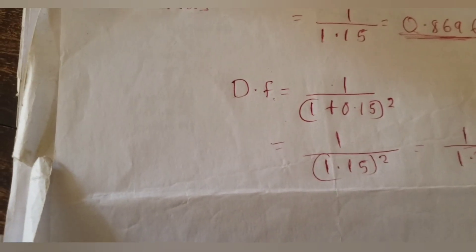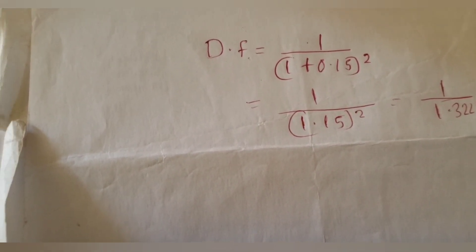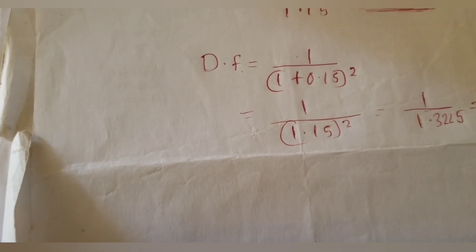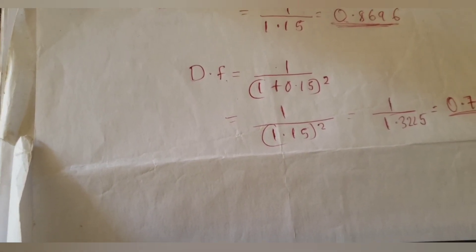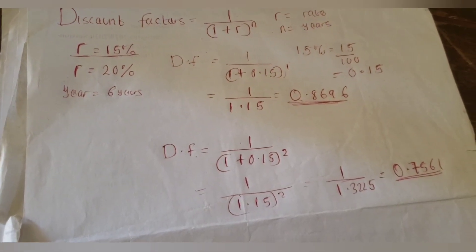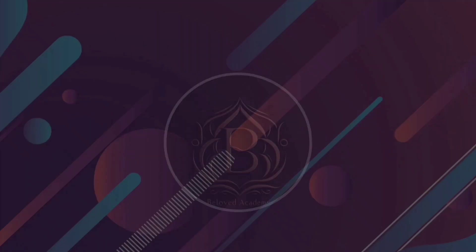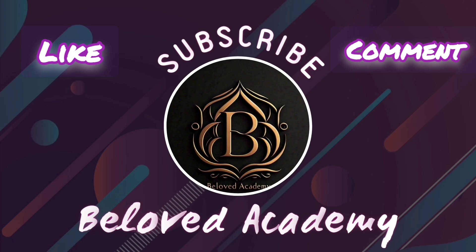Let me give you some advice: if you are permitted to take the discount factor table into the exam, please go along with it, because it will ease your operation. There might not be any marks allotted to all these calculations. So if you're permitted, take it. If you are not permitted, use this formula to get the discount factor for the respective year. See you in the next class — check the description or the playlist for the next video.